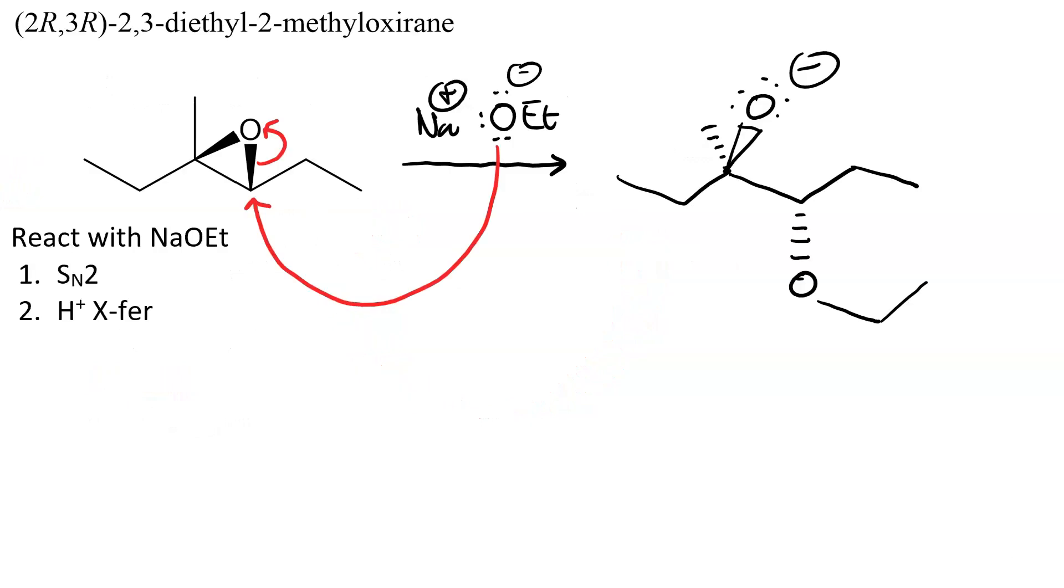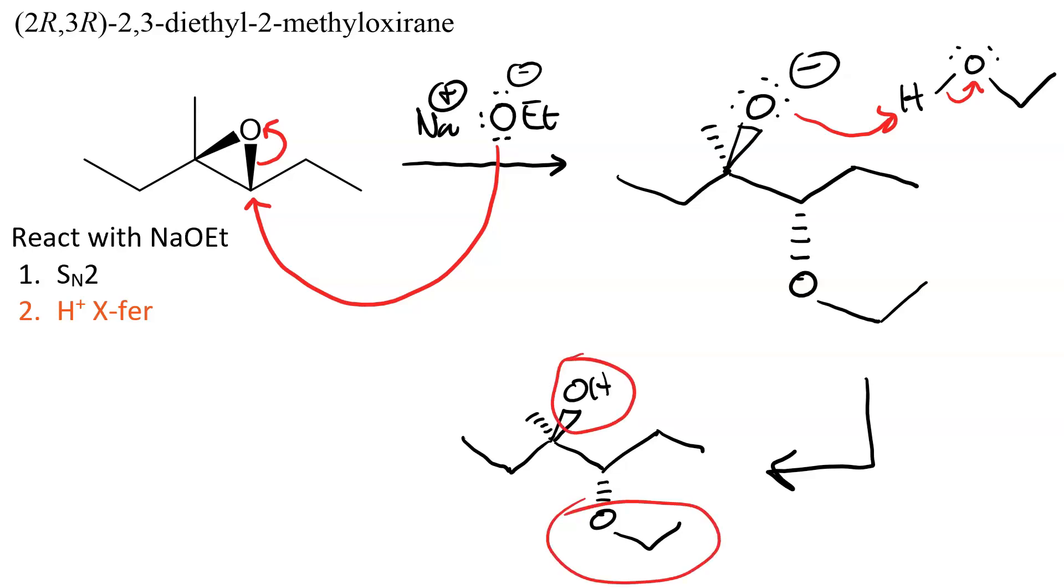Now we need a source of protons to protonate the oxyanion. And it will probably be water, which is most likely the solvent you would do this in. Actually, you would probably want to do this in ethanol. So, the alkoxide attacks the ethanol proton. And so now we have ether in the less substituted position, and the alcohol in the more substituted position. But the two functional groups are once again vicinal to each other.